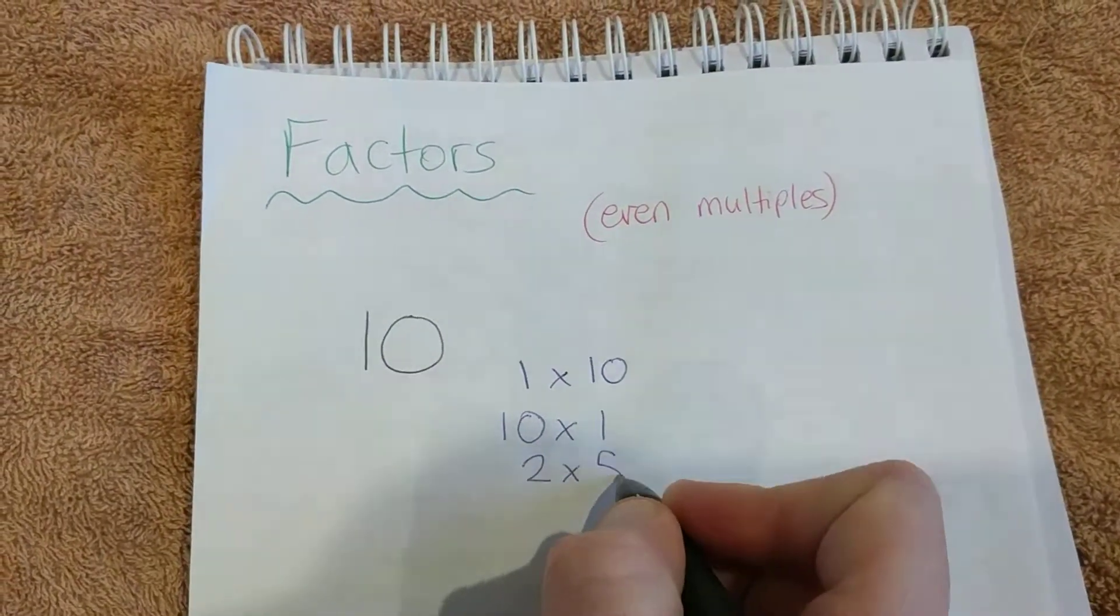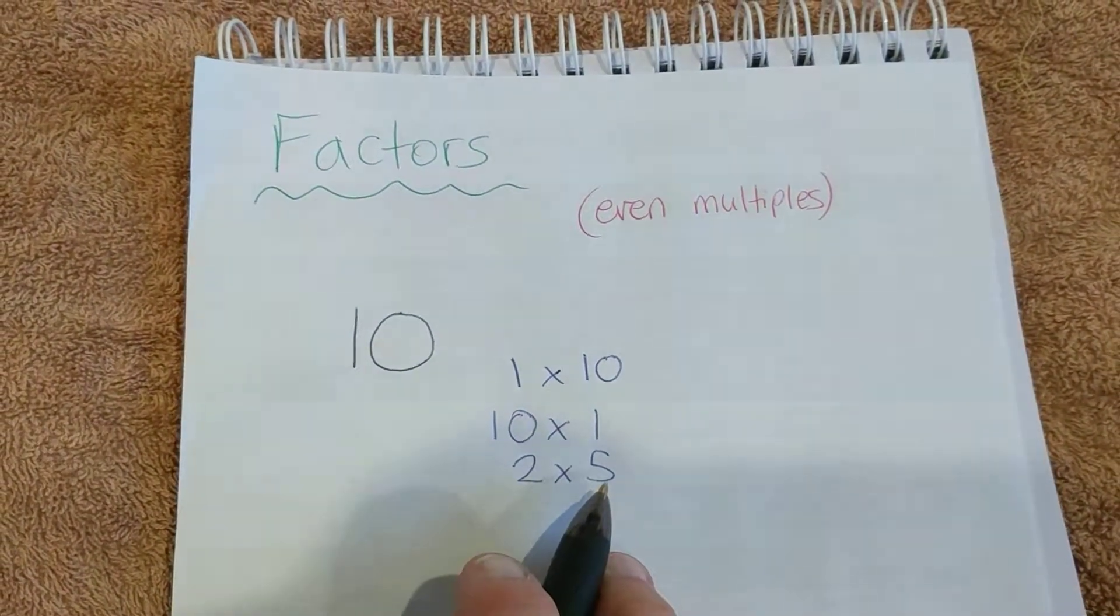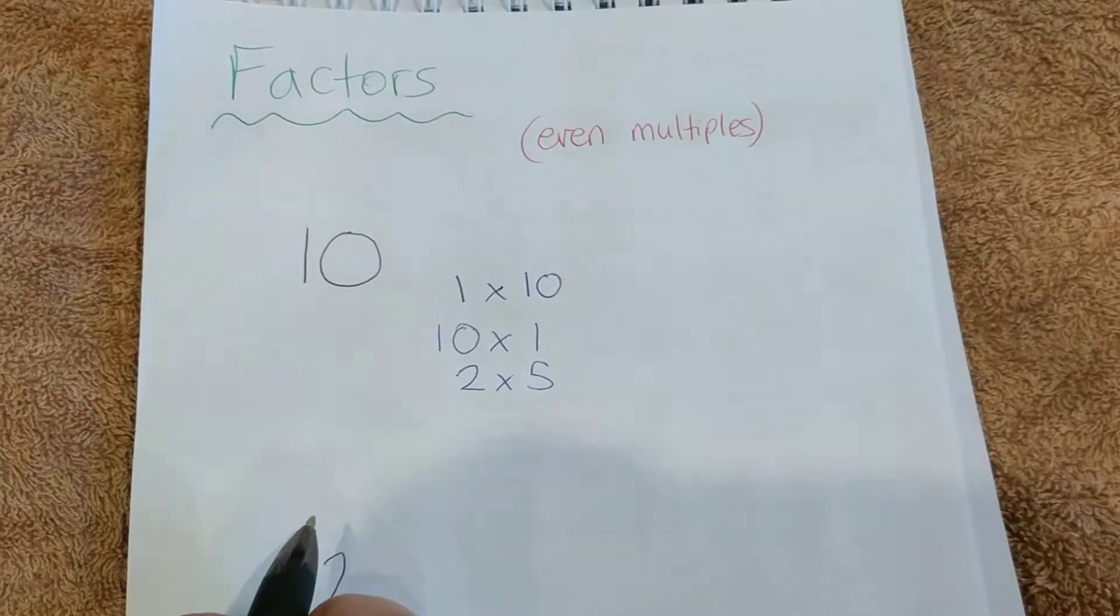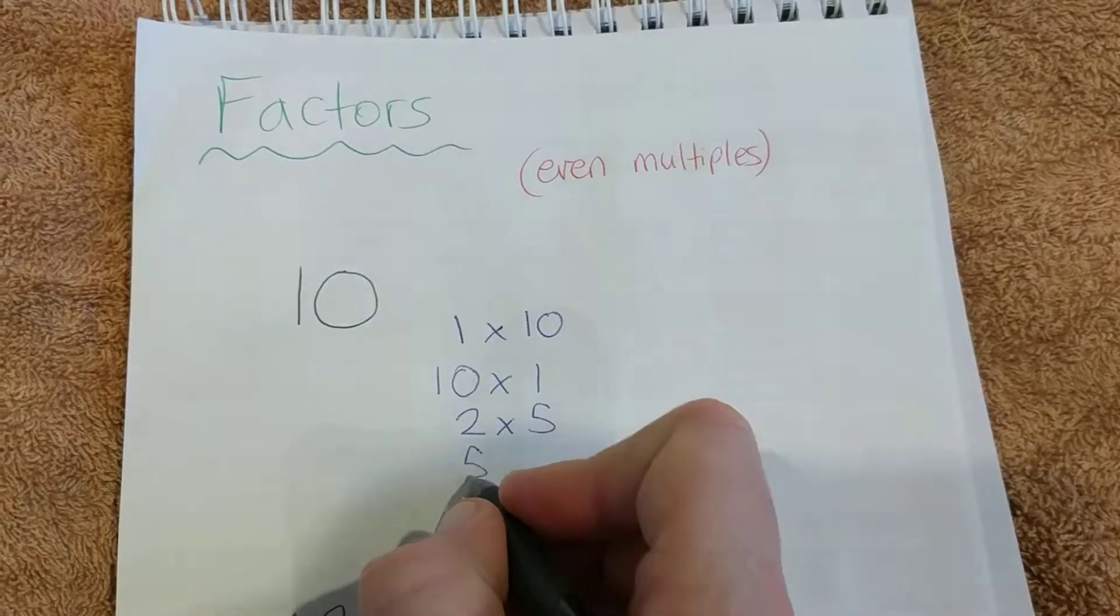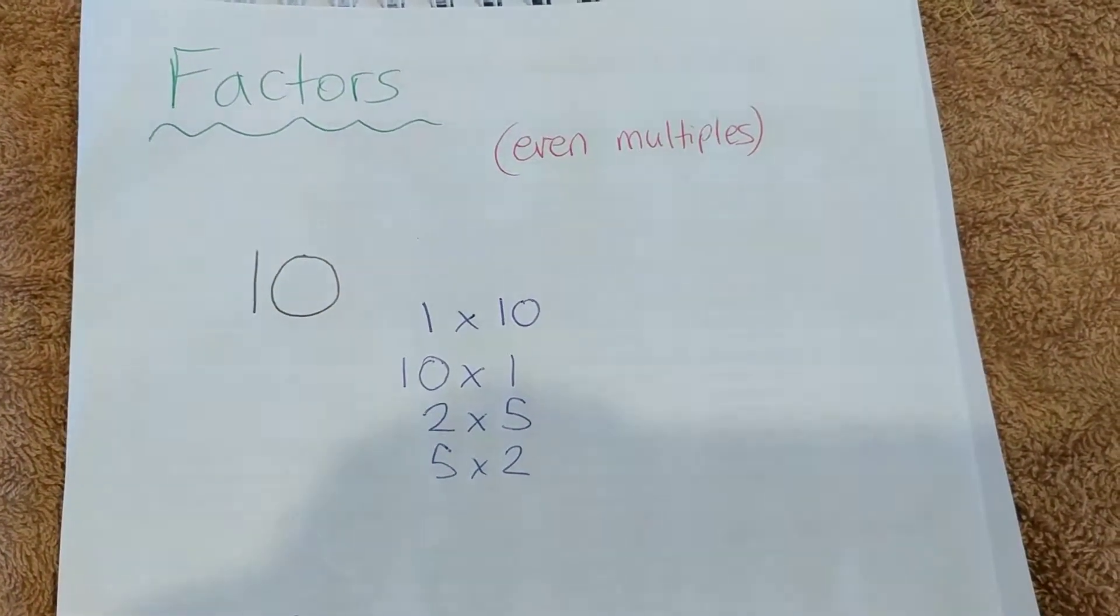So 2 times 5, and straight away we know then that 5 must be a factor because 5 goes into 10 two times. So 5 is a factor of 10. We've come up with 4 factors so far. We can keep going now.